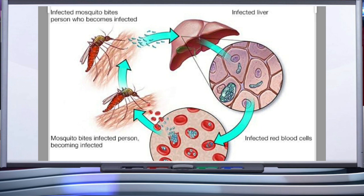Rupture of RBCs releases a toxic substance called hemozoin. Hemozoin causes chills and high fever, reoccurring every three to four days. When a female Anopheles mosquito bites an infected person, the parasites enter the mosquito's body and undergo further development. The parasites multiply within them to form sporozoites that are stored in their salivary glands. When these mosquitoes bite a human, the sporozoites are introduced into the human body to initiate the entire life cycle of Plasmodium again.